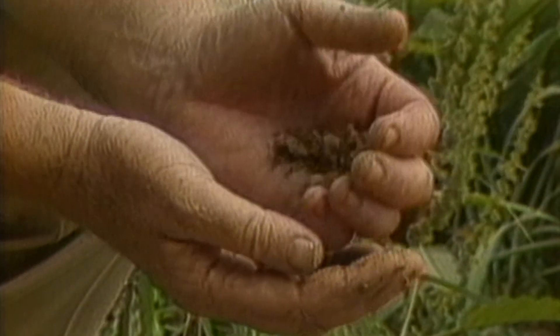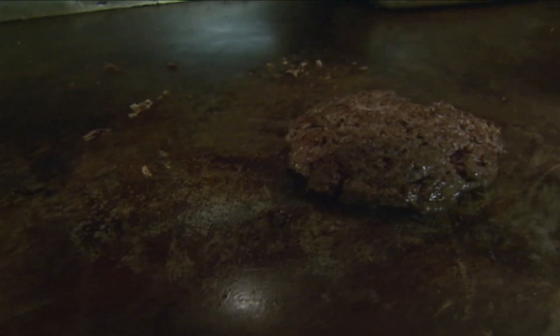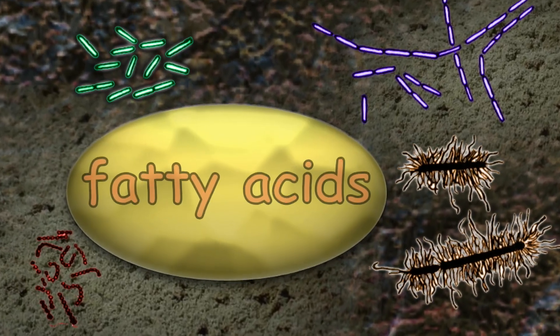Let's start by getting the dirt on dirt, greasy dirt, like what collects on kitchen surfaces when you fry a hamburger. If you could see that dirty, greasy surface on a molecular level, you'd see a dense mat of dirt particles, bacteria, and grease molecules.